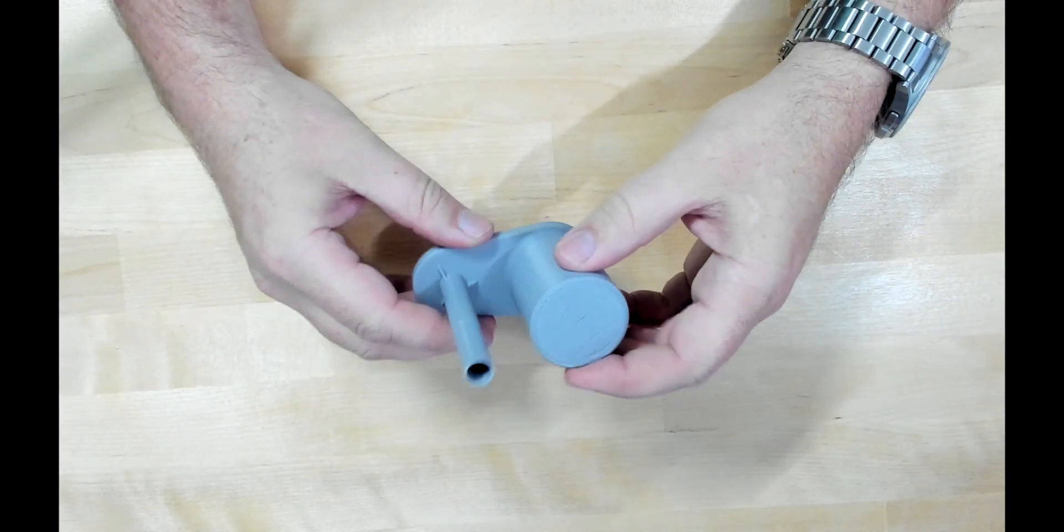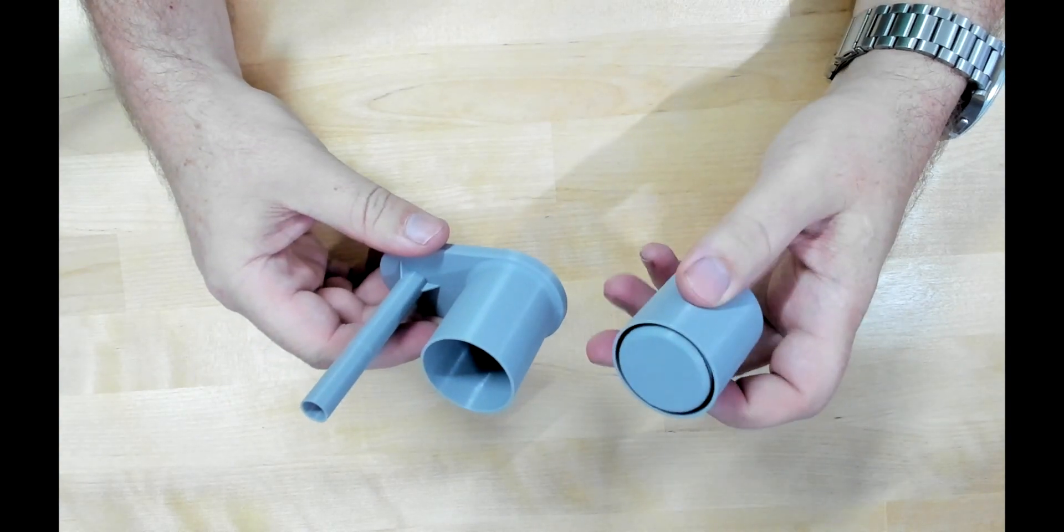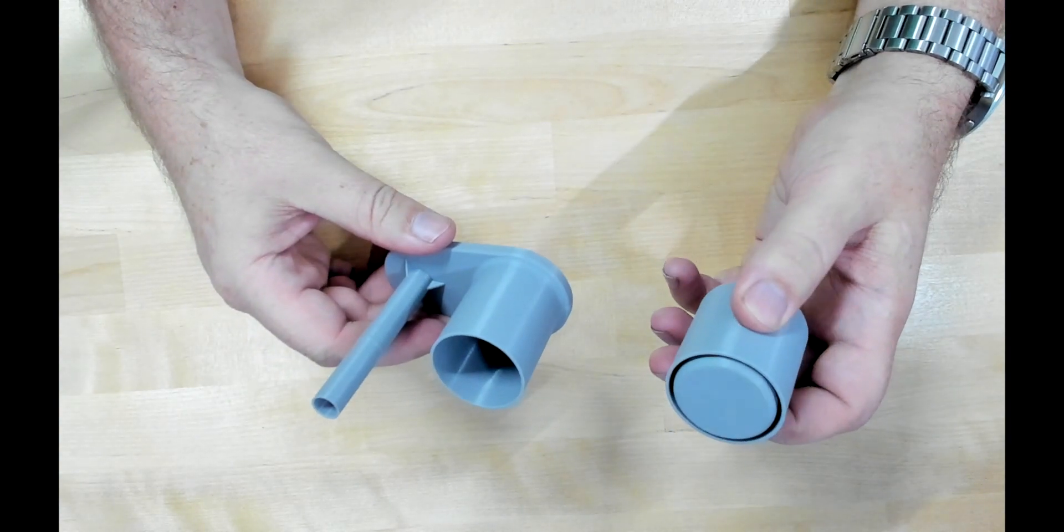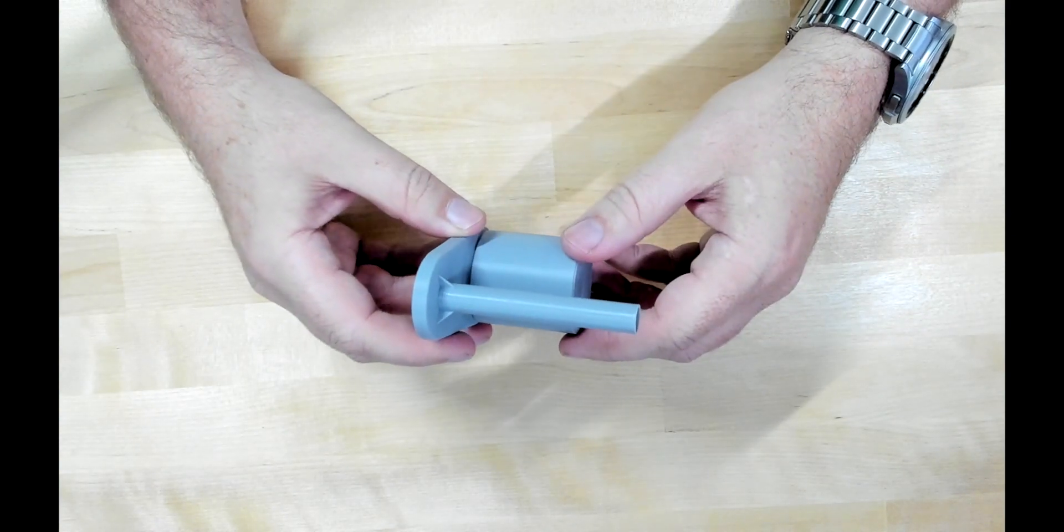Guys, so I've got the models here that printed out, and this is the first one I did in the gray. It came out great. I used the Overture gray PLA Pro. It's a little bit tougher than the regular PLA. I've used both their PLA and their PLA Pro, and to be honest, not a huge difference...